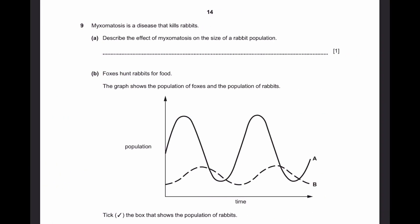Let's go to question 9. Myxomatosis is a disease that kills rabbits. Describe the effect of myxomatosis on the size of a rabbit population. Obviously if a disease kills rabbits that means if this disease is present the rabbit population decreases.